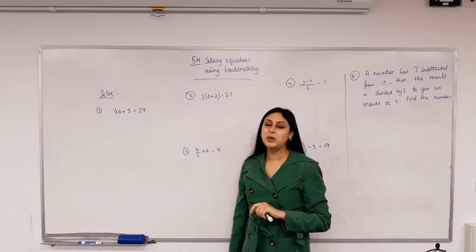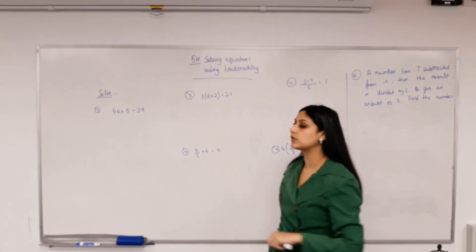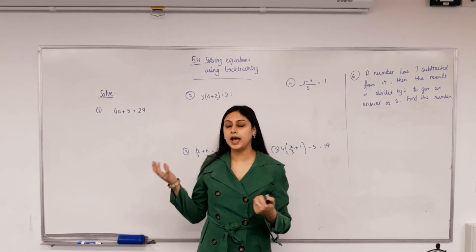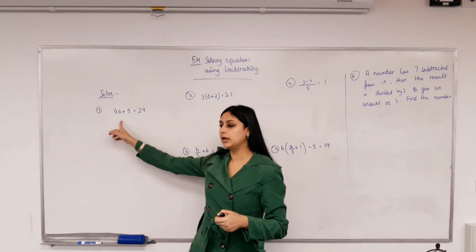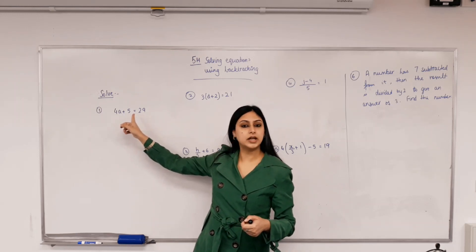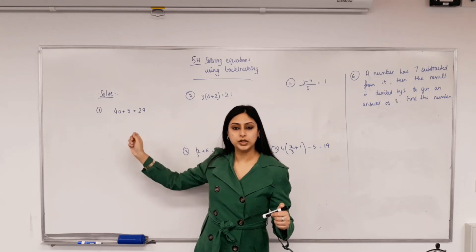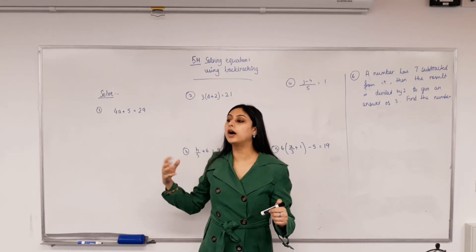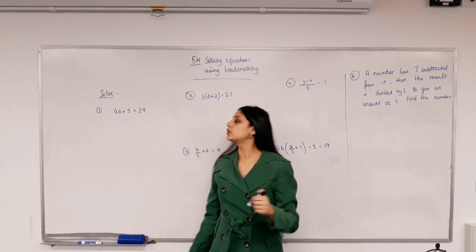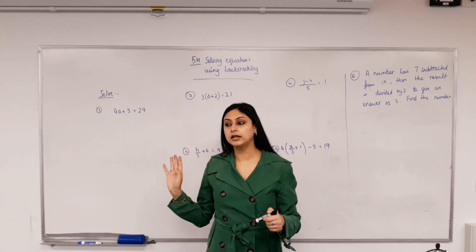As on the board, we're continuing on with 5H — solving equations using backtracking. It's the same idea: we have to first build the expression. But this is not just an expression. It has an equal sign, which makes it an equation. So now we can also find what that thing is equal to. We need to find this using backtracking.